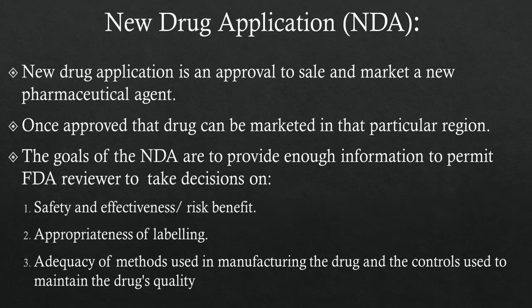Once the phases of clinical trials are completed, all the parameters including indications, guidelines for therapeutic use, safety, and efficacy have been formulated. A New Drug Application, NDA, is submitted to the licensing authority, who if convinced give marketing permission. New drug application is an approval to sell and market a new pharmaceutical agent. The goals of the NDA are to provide enough information to permit FDA reviewers to reach the following key decisions: whether the drug is safe and effective in its proposed uses and whether the benefits outweigh the risks; whether the drug's proposed labeling is appropriate and what it should contain; and whether the methods used in manufacturing the drug and the controls used to maintain the drug's quality are adequate to preserve the drug's identity, strength, quality, and purity.